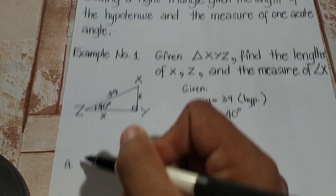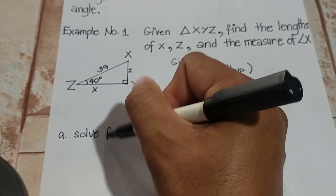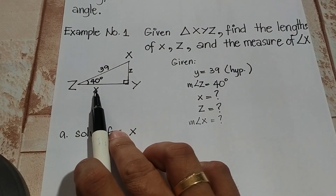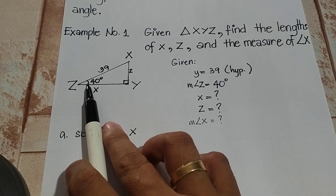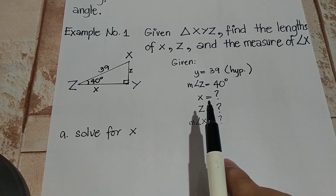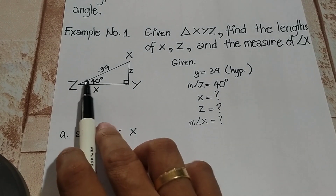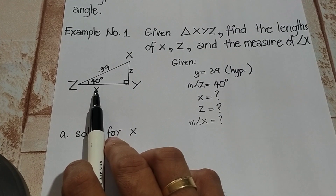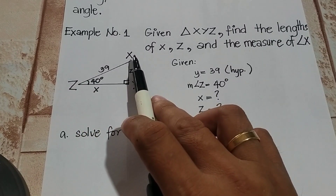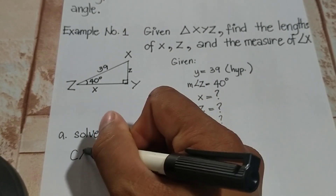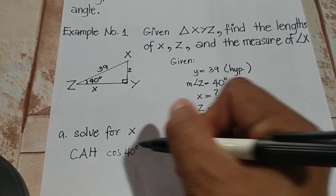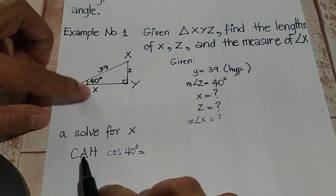For part A, let us solve for the length of side X. Based on the illustration, side X with respect to angle Z is our adjacent side, and we have the given angle and hypotenuse. So we'll be using cosine — that is K. Cosine of 40 degrees is equal to adjacent over hypotenuse, so cosine 40° = X / 39.